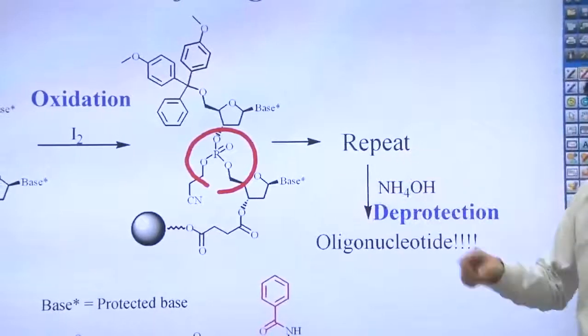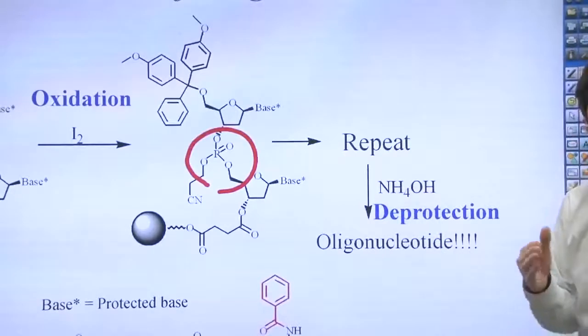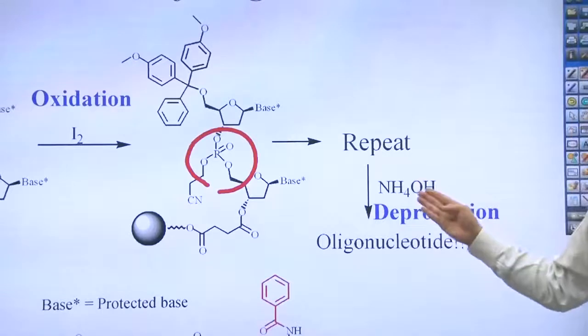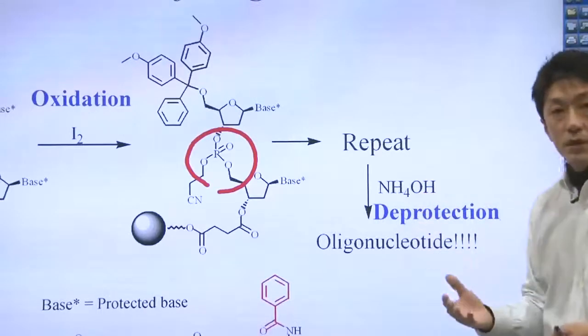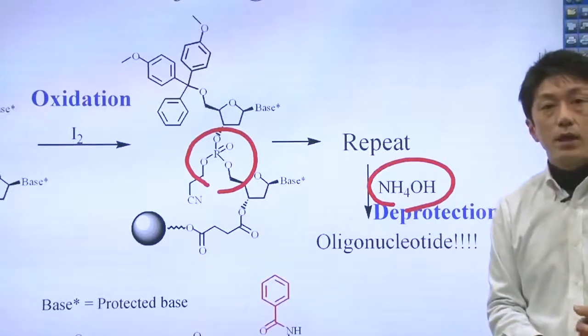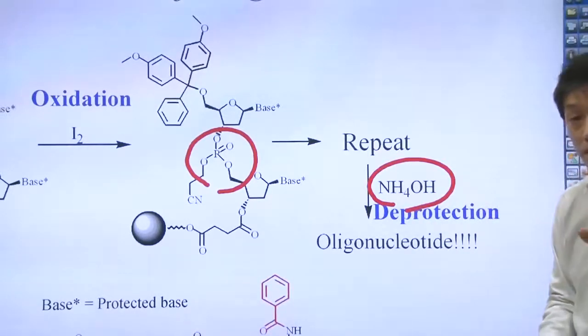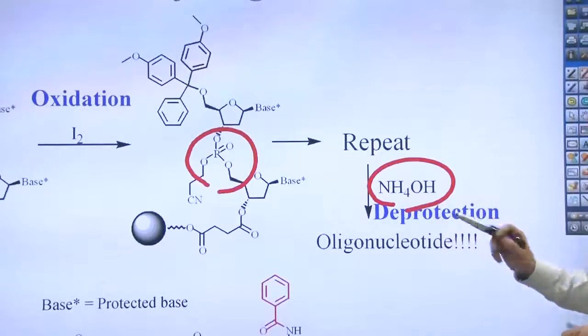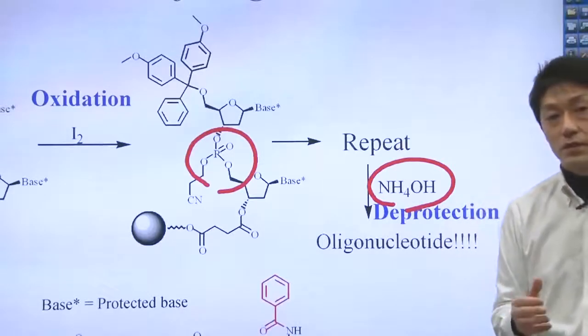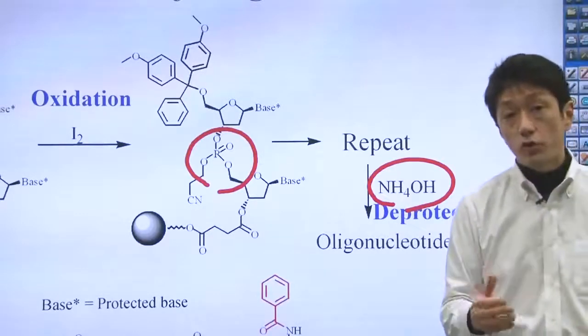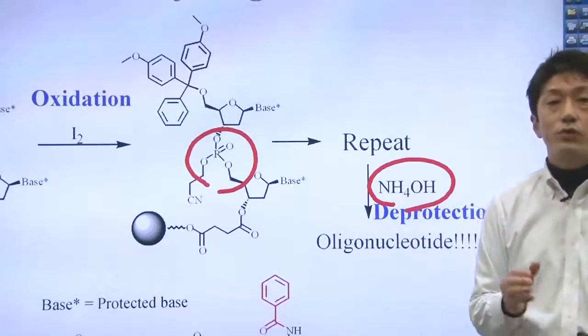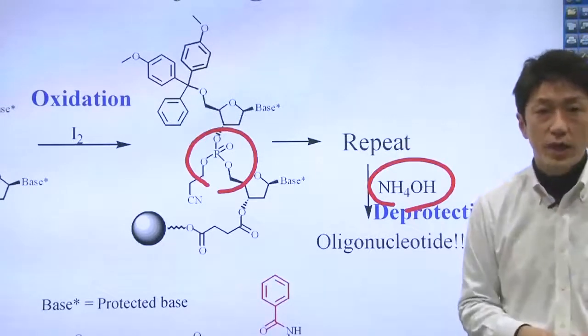By repeating this process, long DNA strands can be synthesized chemically. Finally, DNA is cut from the beads with ammonia water. And, the protective components from the bases are removed. Then, you can get oligonucleotide. This repetitive synthesis technique is now automated and has made it possible to chemically synthesize DNA up to about 100 nucleotides in length.